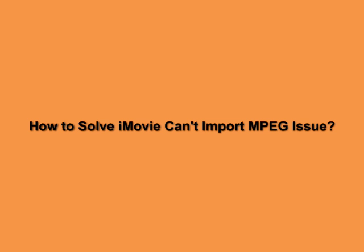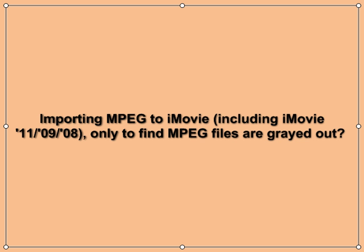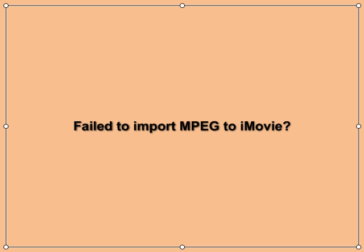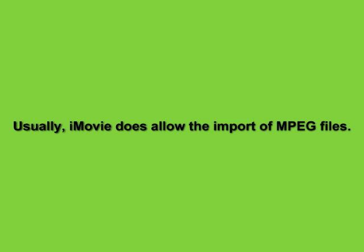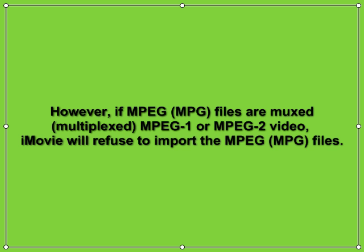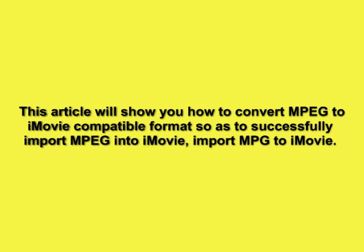How to solve the iMovie can't import MPEG issue. When importing MPEG to iMovie — including iMovie S11, S09, S08 — you may find MPEG files are grayed out and fail to import. Usually iMovie does allow the import of MPEG files; however, if MPEG files are muxed (multiplexed), or are MPEG-1 or MPEG-2 video, iMovie will refuse to import them. This article will show you how to convert MPEG to an iMovie-compatible format to successfully import MPEG into iMovie.